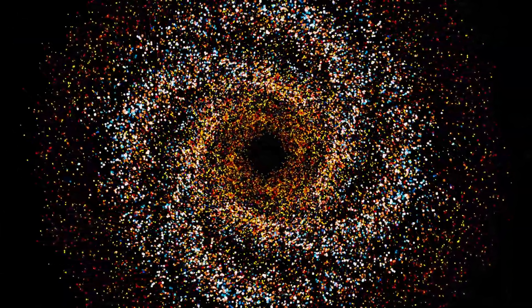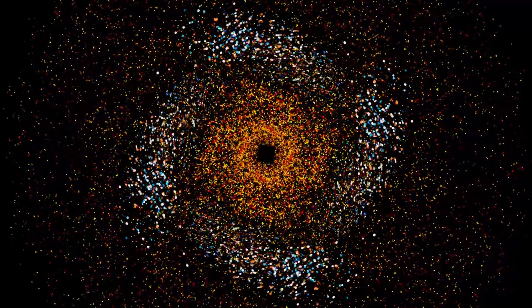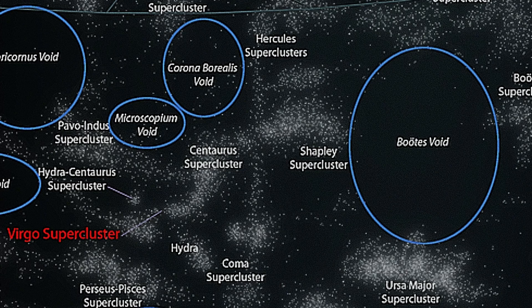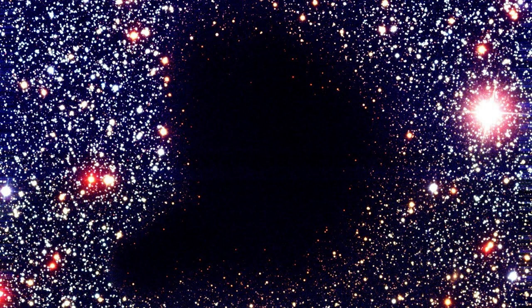So how does something like this even form? That's still up for debate. Some theories suggest that galaxy formation simply didn't occur there due to variations in density after the Big Bang. Others propose that multiple smaller voids merged into one supervoid. But it's the sheer scale of it that rattles scientists. It shouldn't be that big. According to the standard model of cosmology, voids that massive are extremely unlikely to form naturally within the current age of the universe. The Boötes Void challenges our understanding of how galaxy clusters and how the universe organizes itself. It's not just a gap. It's a cosmic question mark carved into the sky. And somehow, that makes it even more fascinating.